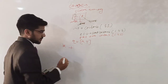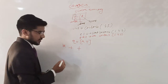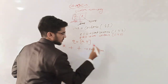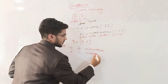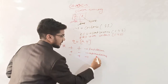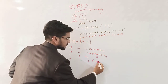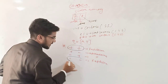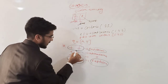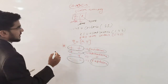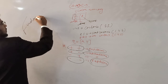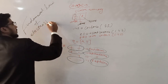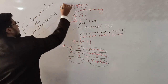Now, an interesting thing about charges: if you have two positive charges, the behavior is repulsion. Positive and negative charges show attraction. Negative and negative charges show repulsion. This means same type of charges repel each other, while different types attract each other. This is the fundamental law of electrostatics.